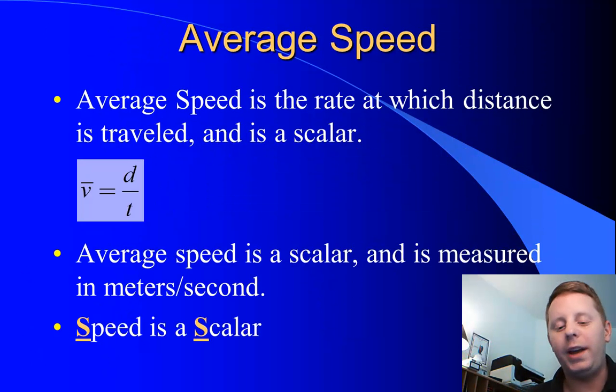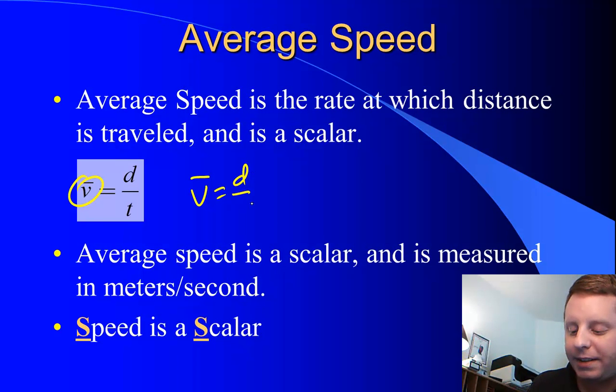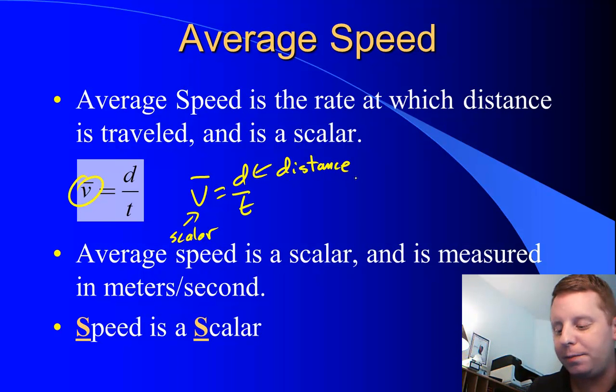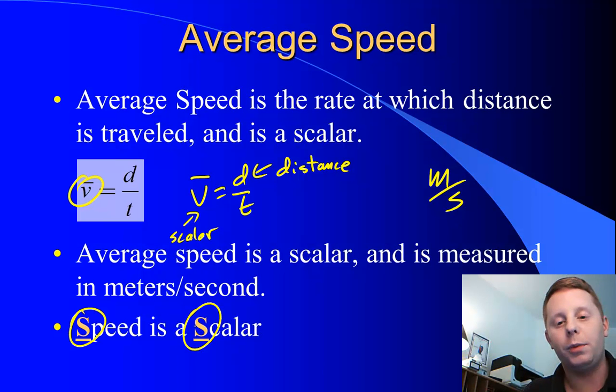Average speed is the rate at which distance changes. It's a scalar, and it's given the symbol V with the line over it. V stands for speed or velocity, the line means average. Now when you use this formula, D over T, because you're talking about average speed, which is a scalar, you have to use a scalar in your formula. That D must therefore stand for distance, so average speed is distance divided by time. The units of this are meters per second. Speed is a scalar. They both start with S.